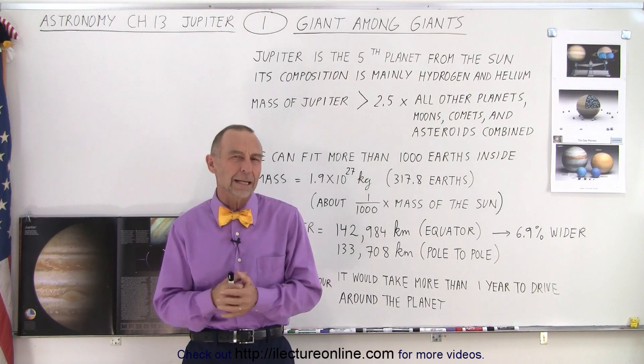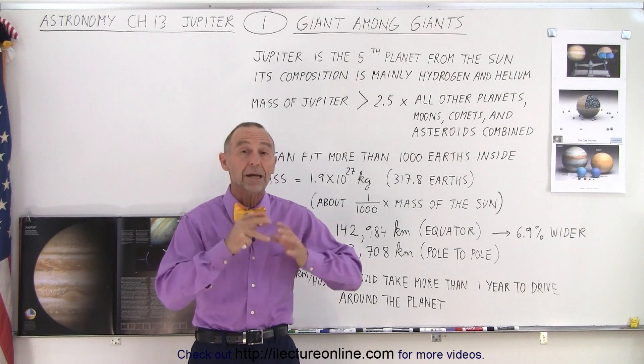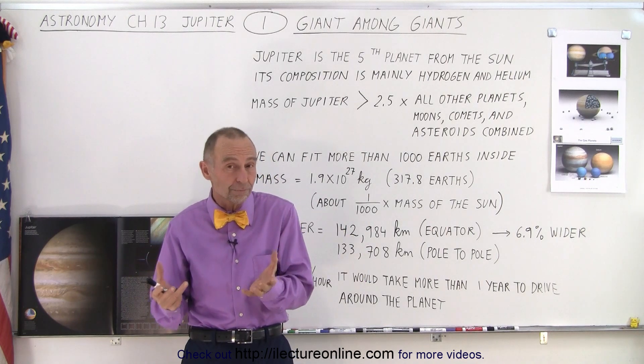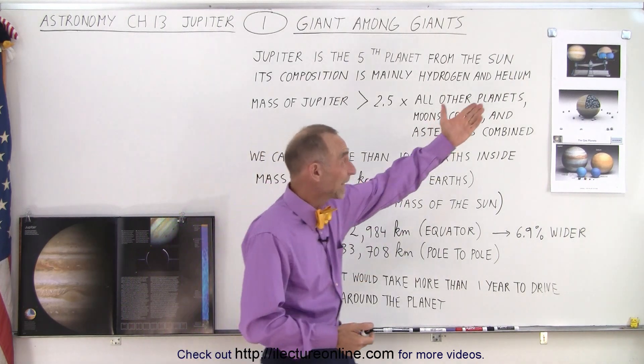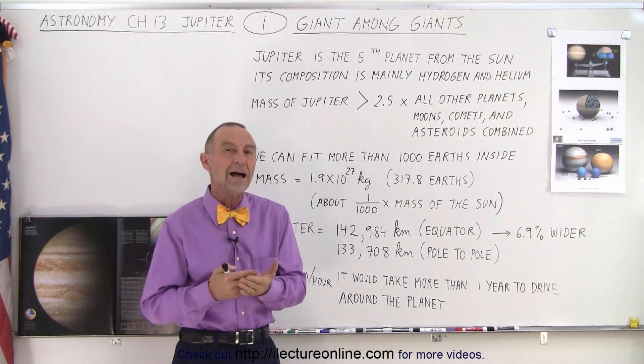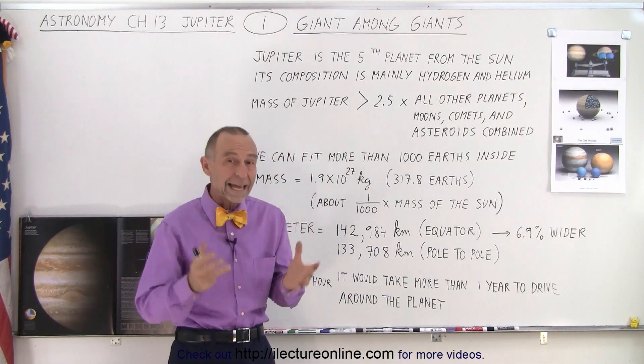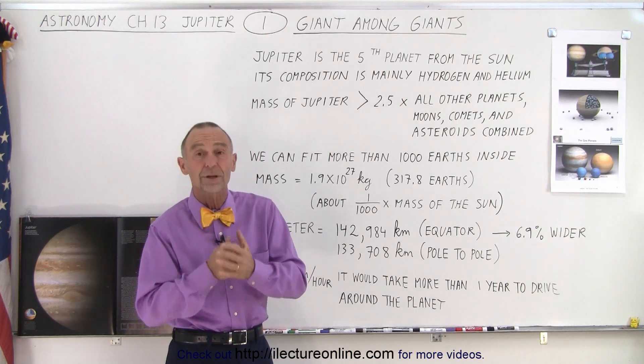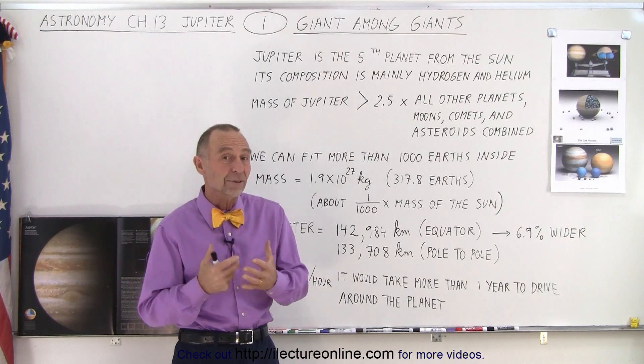How big is the planet? Well, if you were to take the mass of Jupiter and compare it to the rest of the solar system, for example, if you were to put it on a scale, the mass of Jupiter is more than two and a half times the mass of all the other planets, moons, asteroids, and comets put together. That is quite something.